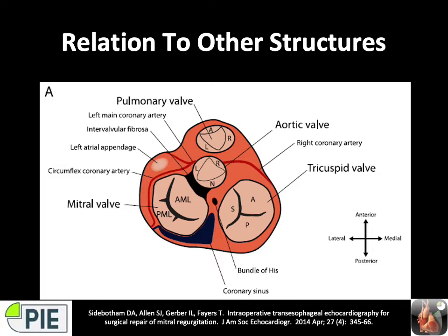The orientation of the valve and its relation to other structures are important to understand — this will facilitate proper assessment and recognition of complications post mitral valve surgery. The mitral valve is situated posterior and lateral to the aortic valve. It's to the left of the tricuspid valve, anterior to the coronary sinus, and posterior to the left circumflex artery. The posterior portion is in close proximity to the bundle of His. The valve is slightly tilted with the anterior portion superior to the posterior portion. Clinical implications include possible complications such as tear of the coronary sinus, aortic valve injury, tricuspid valve problems, conduction system abnormalities, and circumflex artery injury.